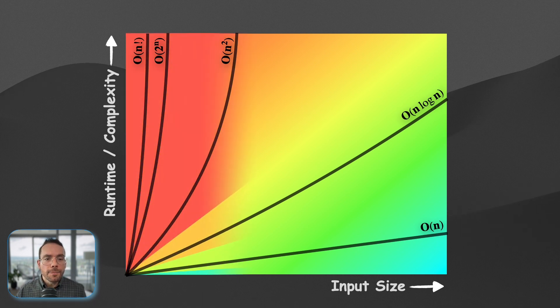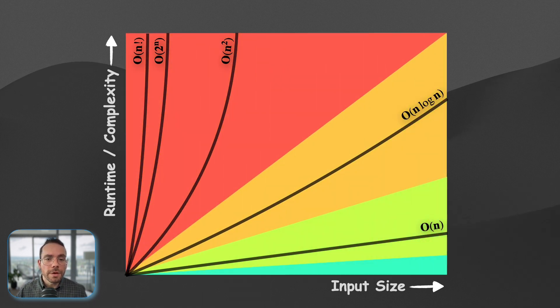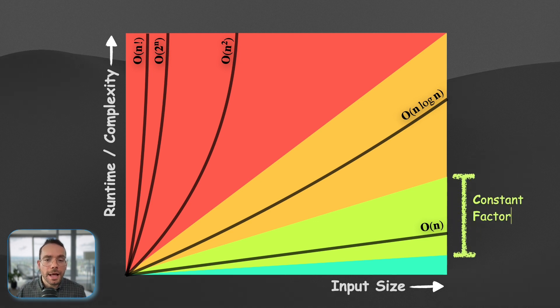Of course, one might think improvement means moving from one complexity class to another, and all algorithms within the same class are created equally. But that's not quite true. Let's take O(n) band as an example.